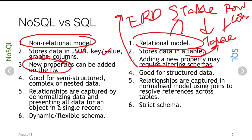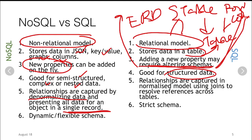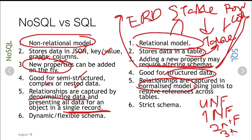NoSQL is very good for semi-structured, complex, or nested data, whereas SQL is suited for structured data because it deals with rows and columns. In NoSQL, relationships are captured by denormalizing data, and all data are presented in a single record. In SQL, we have to normalize the data first — going from unnormalized form to 1NF, 2NF, and 3NF. You may revise this on your own, but this is what we call normalizing the data.